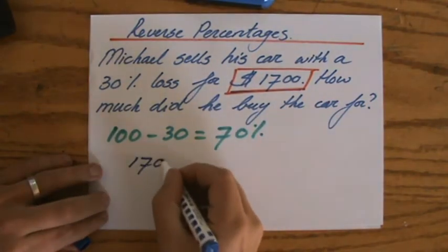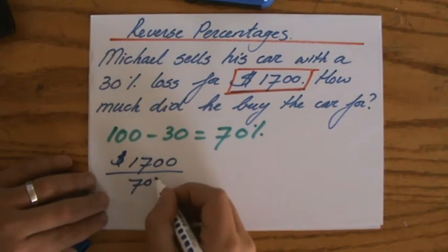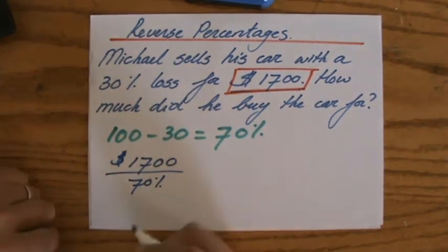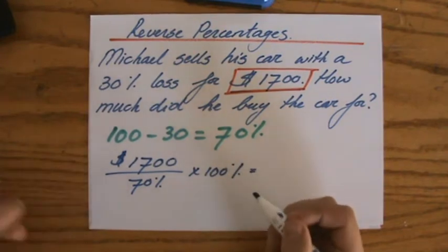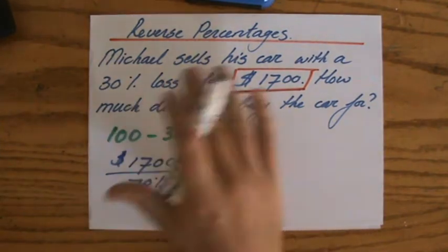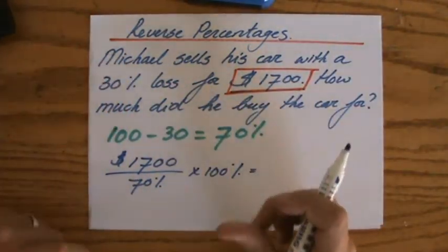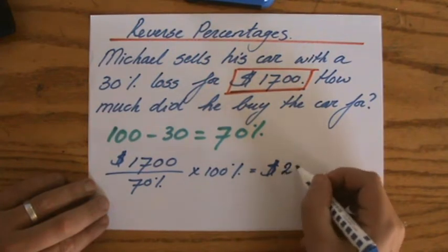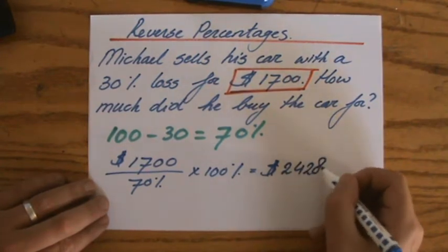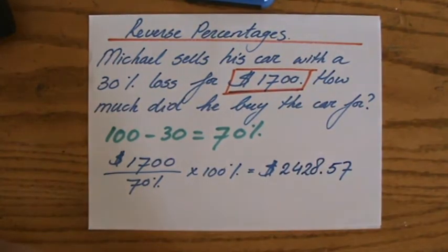$1700 divided by 70% gives me 1%, and I times it by 100% to get the original amount. If you do that to two decimal places—they usually say correct to two decimal places, and those are the cents when we're talking about money—it is $2428.57. That's your answer.